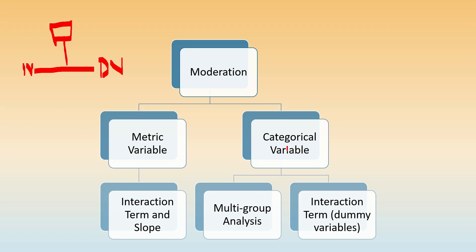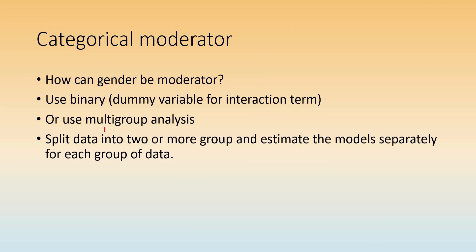Similarly, if we have a categorical variable with discrete values, in this video we focus on those with only two values. We can code them as 0 and 1 to create a dummy variable — for example, gender coded as 0 for female and 1 for male. There are two ways to assess moderation of a binary variable: creating an interaction term, or performing a multigroup analysis.